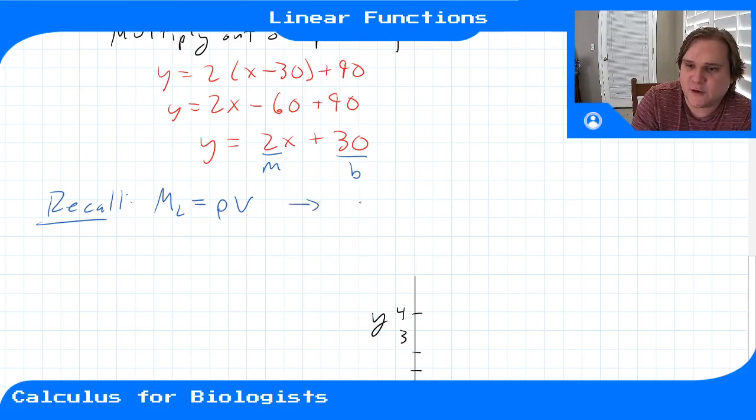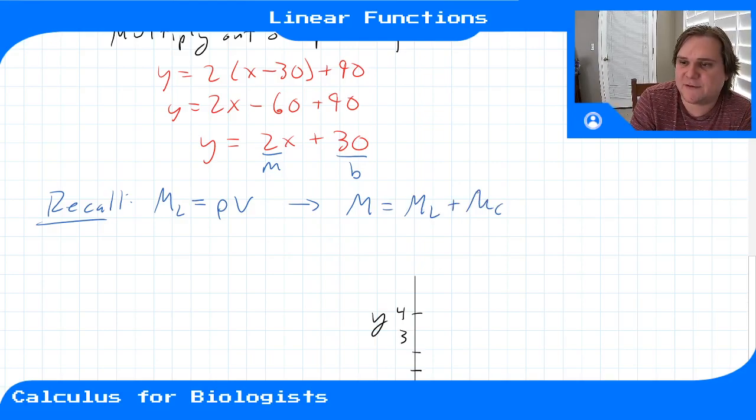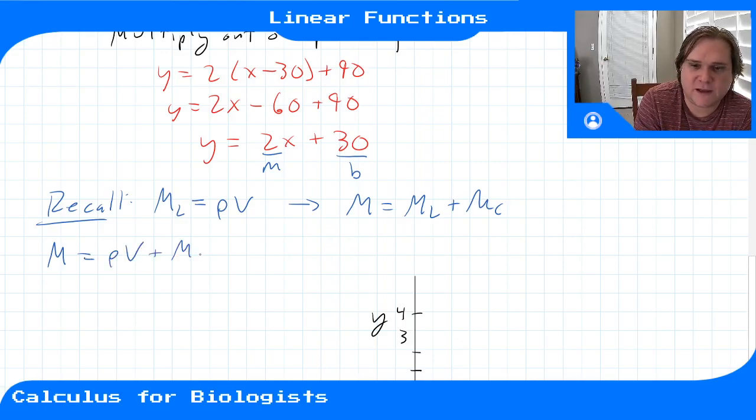But we didn't measure the mass of the liquid, we measured total mass of the liquid and the container. So this mass of the liquid plus the mass of the container. So our equation that we solved up here, this y equals mx plus b, that was really this mass is equal to density times volume plus the weight of the container.